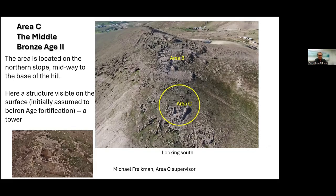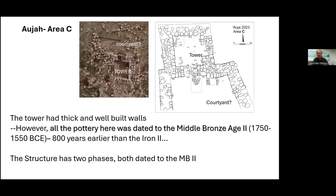Area C, to the north, is on the slope outside the fortified area. We identified a structure before excavation, probably a tower, which we thought was part of the Iron Age fortification. But actually this tower is dated to the Middle Bronze Age 2 — 800 years earlier — also a fortification element but of a different, much earlier period. It was not used during the Iron Age or biblical period.